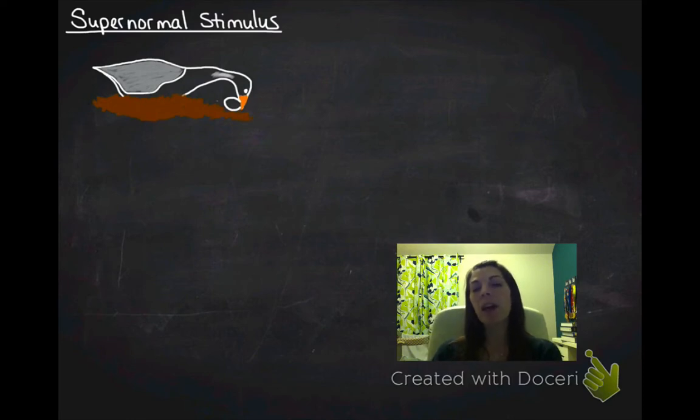What they noticed was if you take the egg away from this goose, it will still continue doing that motion. So they know that egg rolling behavior is a fixed action pattern. It sees the egg, starts rolling the egg back towards it.